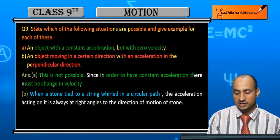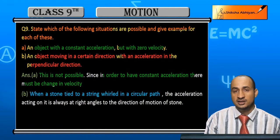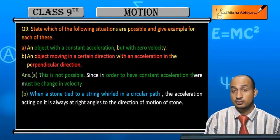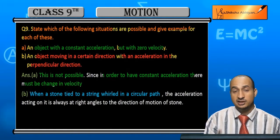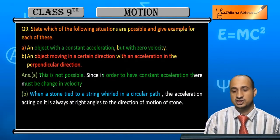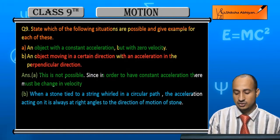When a stone tied to a string is whirled in a circular path, when you tie a stone to a string and rotate it, in that case the velocity's magnitude remains same but due to direction change, velocity changes. So the acceleration acting is always at right angle to the direction of motion of stone.